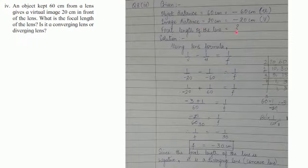Focal length of lens we have to find out. We will make use of lens formula 1 upon V minus 1 upon U is equal to 1 upon F. Substitute the values V is minus 20, U is minus 60 is equal to 1 upon F.